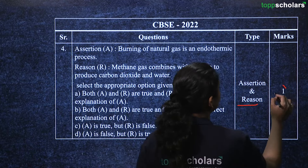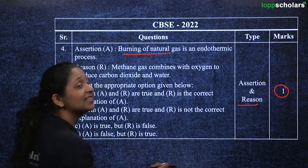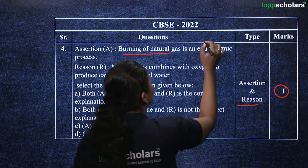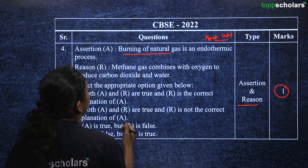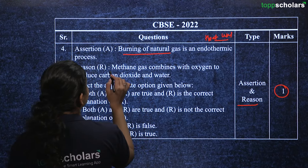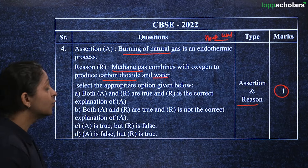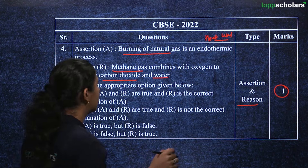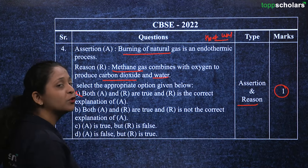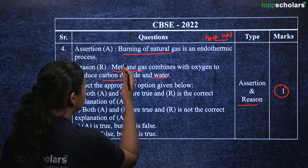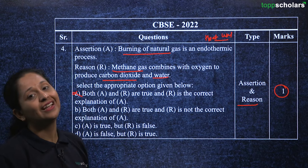Another question from 2022 is an assertion-reasoning question worth one mark. The assertion states: burning of natural gas is an endothermic reaction. The reasoning states: methane gas combines with oxygen to produce carbon dioxide and water. Both statements may be true, but the reasoning is not the correct explanation for the assertion, so you can eliminate option A. For multiple choice questions, it is always better to eliminate incorrect options first.